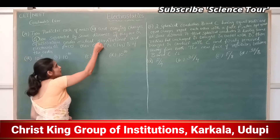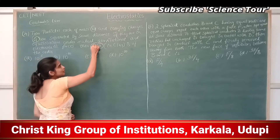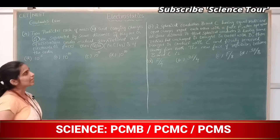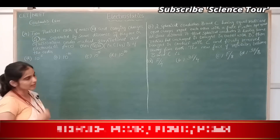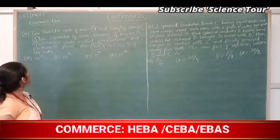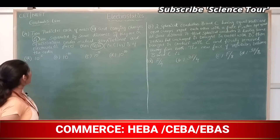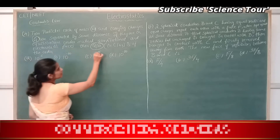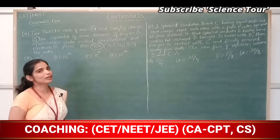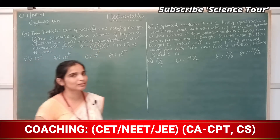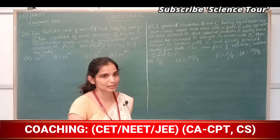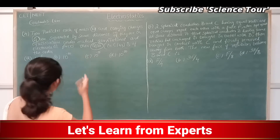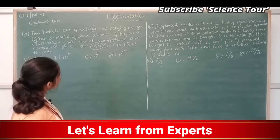They are asking: what is Q by M? Q is the charge and M is the mass, in coulomb per kg. The answer is of the order 10 to the power of minus 10. They are asking only the order, not the exact value.